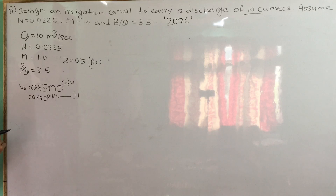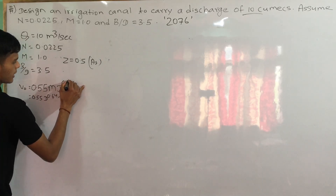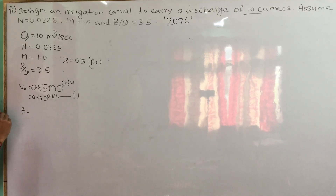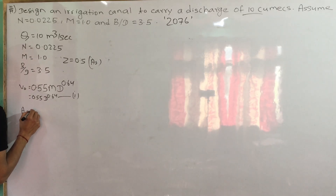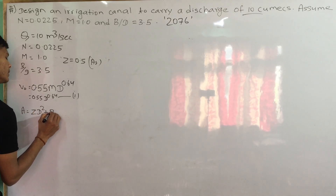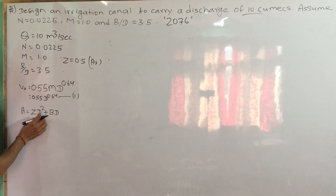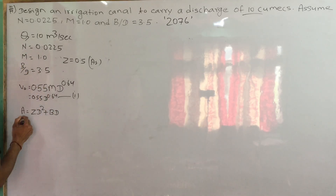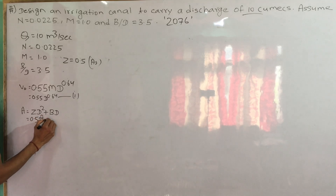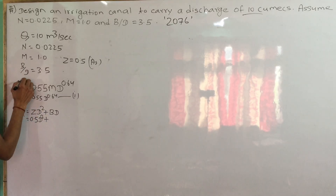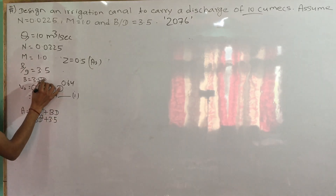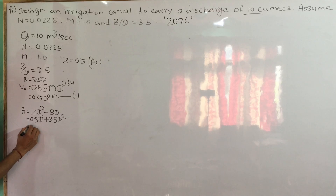We have to set up the area. The area formula includes Z*D² plus B*D. We start with Z, then Z*D², then B*D. The area for this trapezoidal section — with Z as the side slope — gives us A = B*D + Z*D². Using B/D = 3.5 and Z = 0.5, we get A = 3.5D² + 0.5D², which equals 4D².